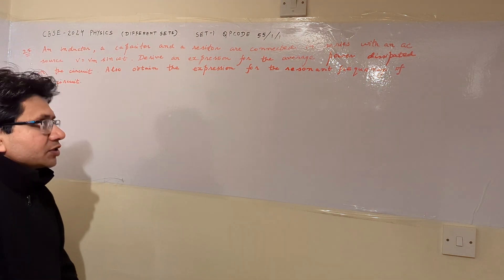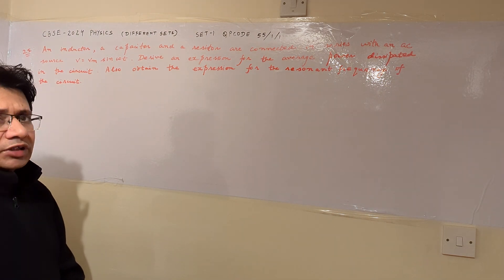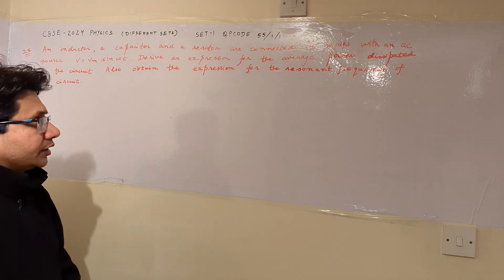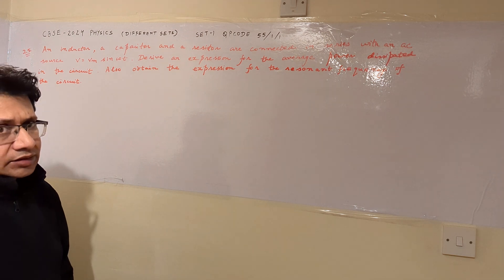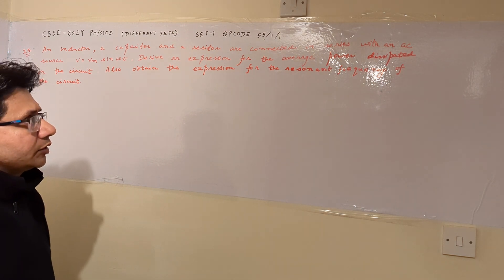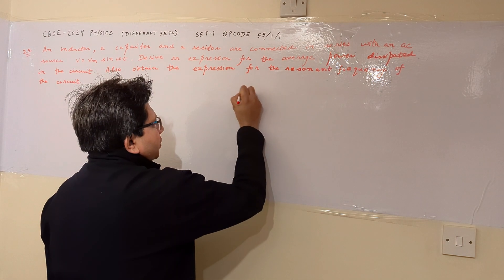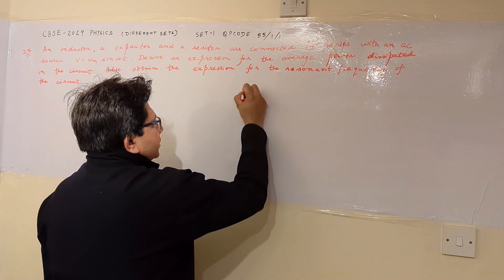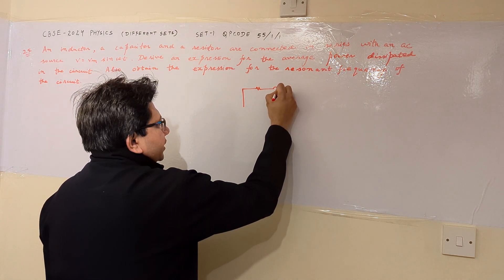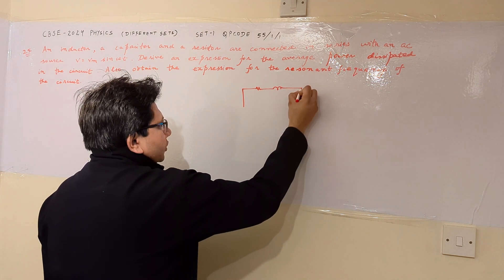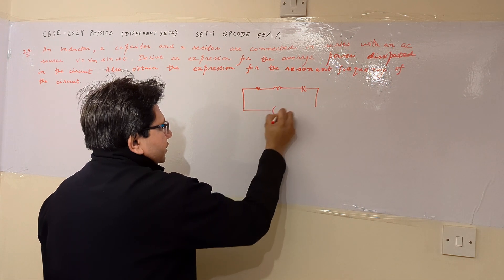This problem is based on the topic of AC, that is alternating current, and the series RLC circuit — specifically the power in a series RLC circuit and the dissipation of power in the series RLC circuit. This is the circuit diagram of the series RLC circuit.